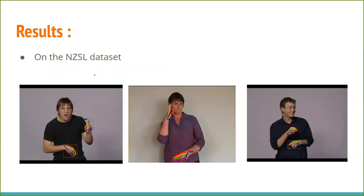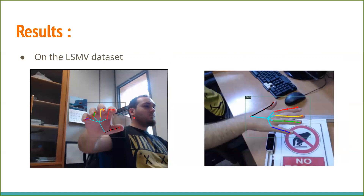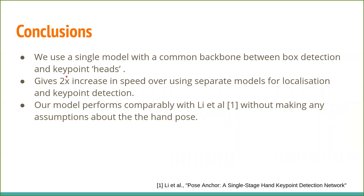For qualitative results, we see that our model can accurately localize as well as detect the key points even when there are multiple instances of the hand within the same image. Some more results are shown on the LSMV dataset. In conclusion, we show that it is possible to use a single model with a common backbone and two heads for bounding box detection and key point detection, giving a 2x increase in speed over using separate models. Our model is not only fast but also accurate, performing comparably with Lee et al.'s method without making any assumptions about the scale of the hand pose.